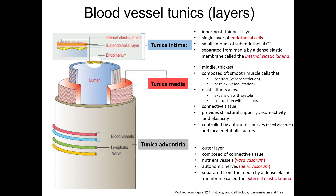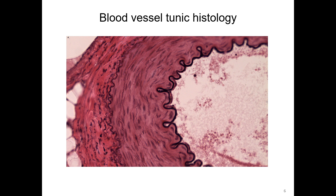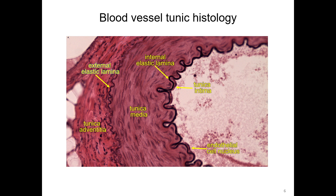So let's take a look at the histology. Here we see a muscular artery containing the tunica intima, showing an endothelial cell nucleus, and the internal elastic lamina. In the tunica media, you can appreciate the layers of smooth muscle cells with their characteristic nuclei. This artery also has an external elastic lamina separating the tunica media from the tunica adventitia. Note the difference in staining between the connective tissue of the tunica adventitia and the smooth muscle layer of the tunica media.